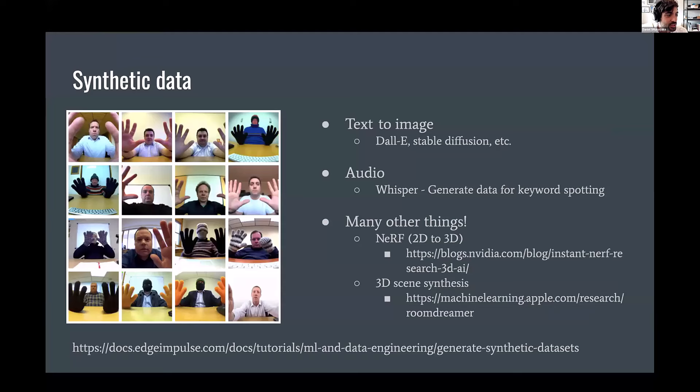Synthetic data is another huge one. So in the left image, we asked DALL-E to generate a bunch of pictures of people either wearing gloves or not wearing gloves for a classifier. The tutorial is at the bottom. You can then use that to train a model that transfers to the real world. Same with audio. We have some examples of using Whisper to generate data for keyword spotting. You can do 2D to 3D or 3D scene synthesis if you want to get really crazy with generating synthetic data of situations.